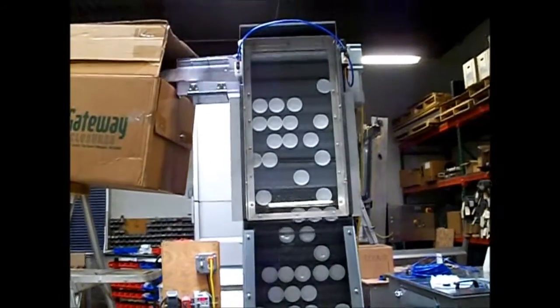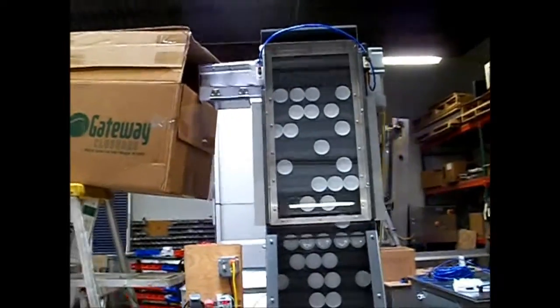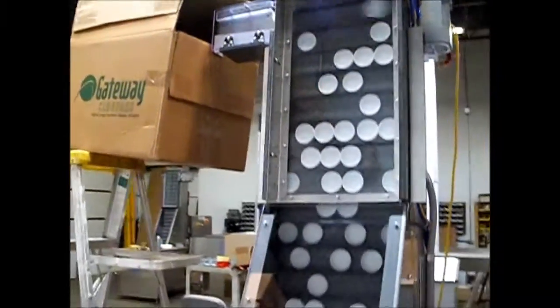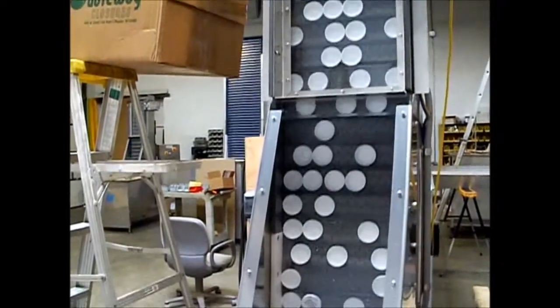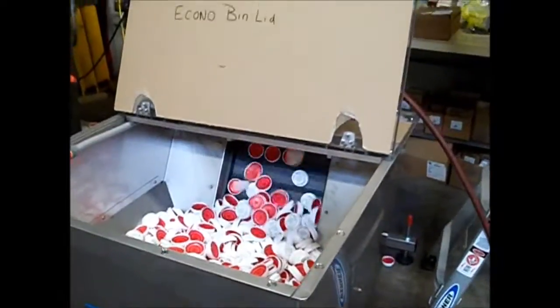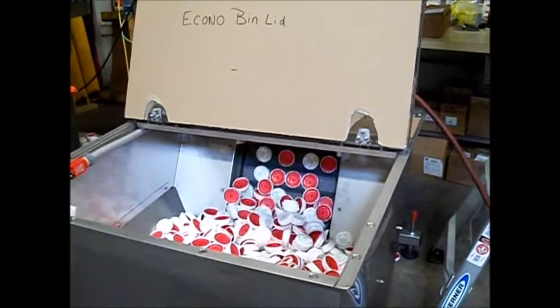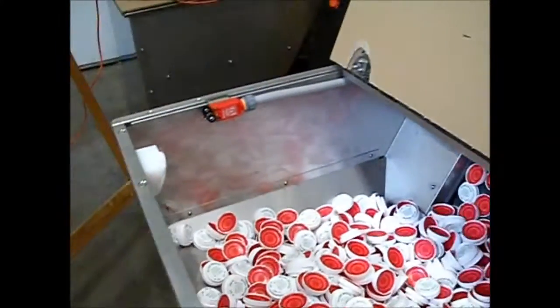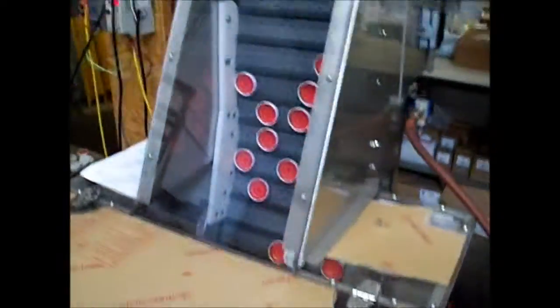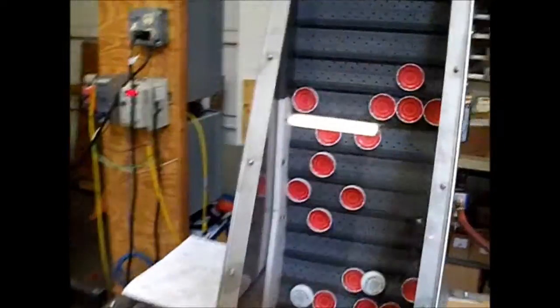CSC has specialized in the manufacture of gravity sorting or waterfall type cap feeders for more than a decade. In that time, CSC has manufactured nearly 150 of this type of machine, with belt sizes ranging from 14 inches wide to 36 inches wide, and hopper sizes ranging from 6 cubic feet to 40 cubic feet.